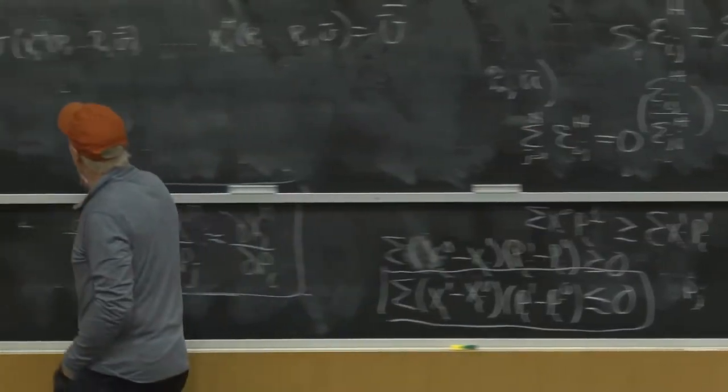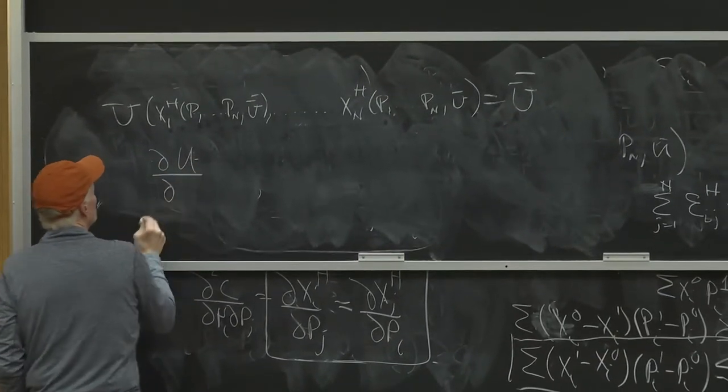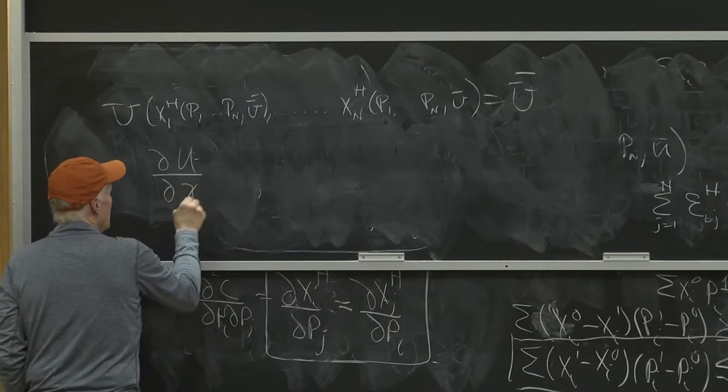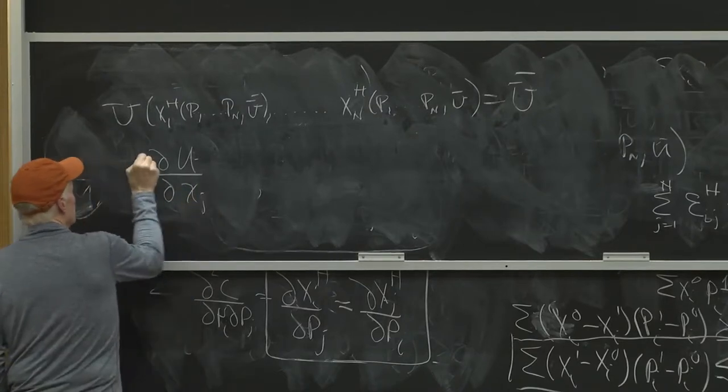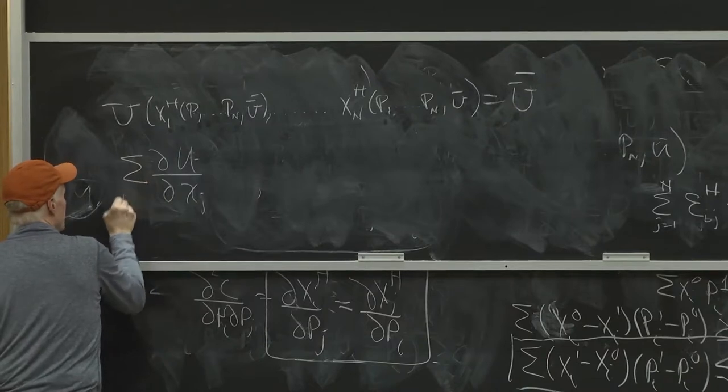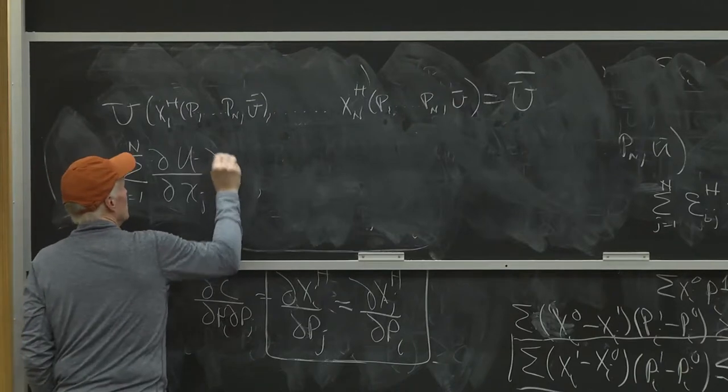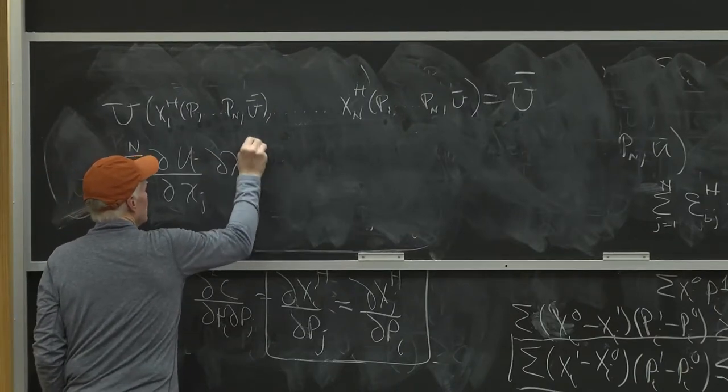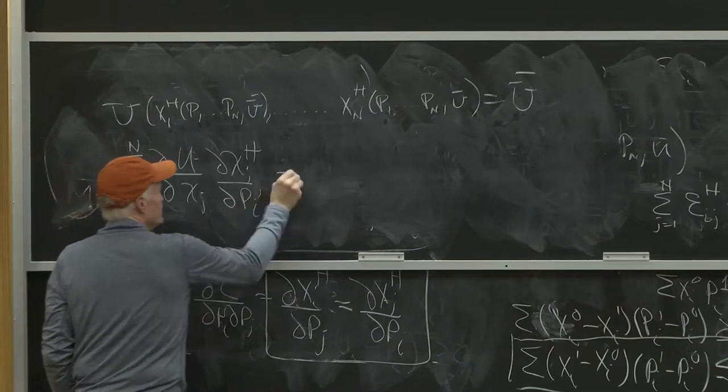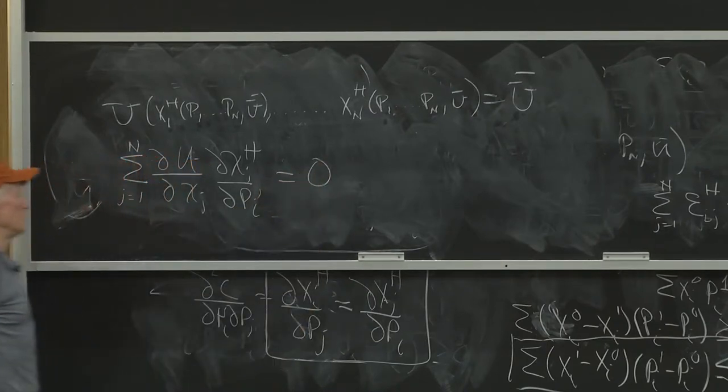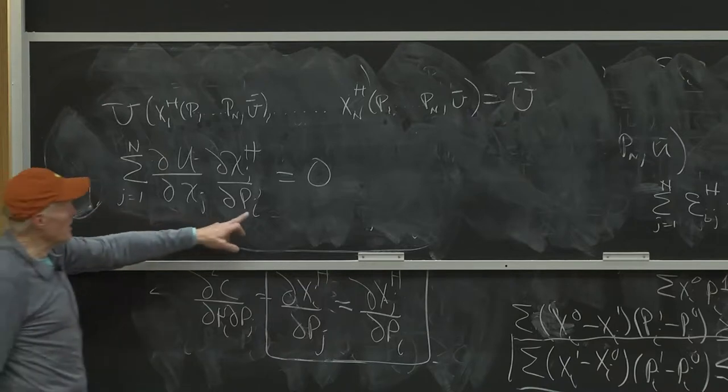So then I'm going to get partial u, partial xi, or say call it xj, sum from j equals 1 to n, times partial xjh, partial pi, has to be equal to 0. That is just totally differentiated with respect to the price of good i.